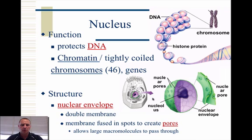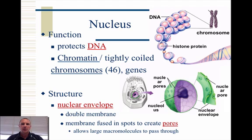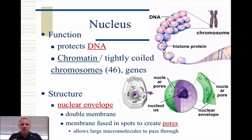Starting out with the nucleus: the main function of the nucleus is to protect DNA. DNA is the code for everything about us, and it has a unique property where it's unable to leave the nucleus. So the DNA is protected by the nucleus. The nucleus houses chromatin, which is simply packed-up chromosomes — remember, 46 chromosomes in a human body — and these massive genes are found inside the nucleus.